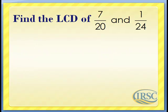Find the LCD of 7/20 and 1/24. We're going to use the prime factorization method. Let's list the prime factors for 20 and then 24.